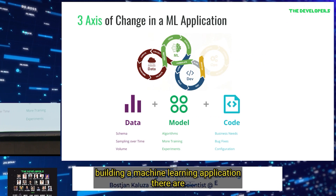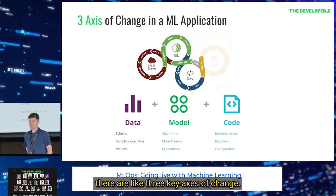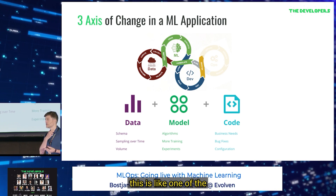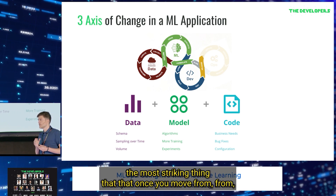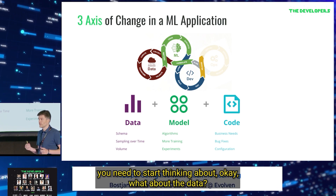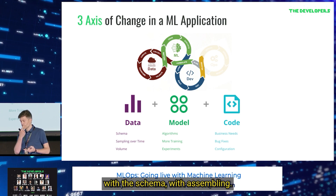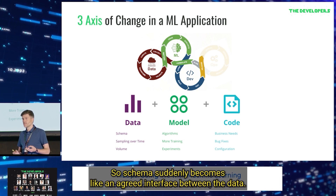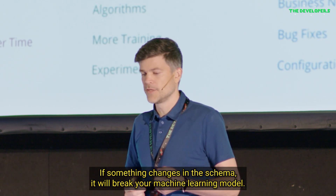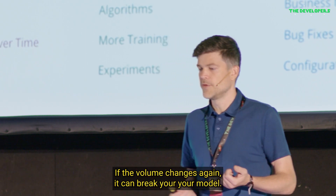When building a machine learning application, there are three key axes of change: the data, the model, and the code. This is one of the most striking things when you move from software development to machine learning — suddenly you need to start thinking about the data. How do I version the data? What happens with the schema, with the sampling? The schema suddenly becomes an integral interface between the data. If something changes in the schema, it will break your machine learning model. If the sampling of the data changes, it can break your machine learning models. If the volume changes, it can break your model.